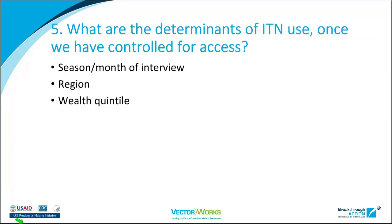What are the determinants of ITN use once controlled for access? From regression analyses, it comes down to: the season the survey was conducted — particularly in the Sahel there are significant drops once mosquitoes disappear and things dry out; secondly, the region, which relates to malaria transmission profile, elevation, and malaria risk; and finally, wealth quintile — a big factor particularly for Nigeria and Ghana.